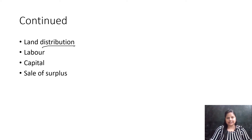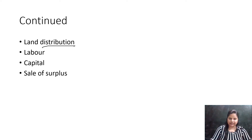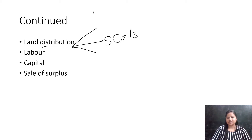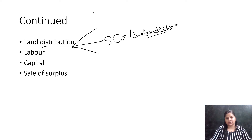We need to understand how land distribution works in village Palampore. As I told you earlier, land is a fixed resource — we cannot increase its quantity. Land distribution means how land is distributed among the population of an area. In village Palampore, the scheduled caste families, who are one-third of the population, are landless. They do not own any land and work on other people's farms as farm laborers to earn wages.